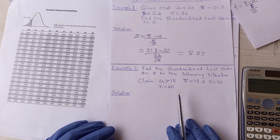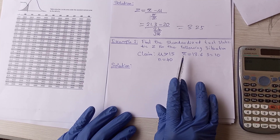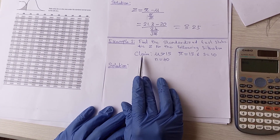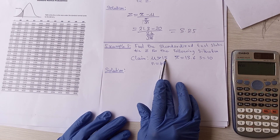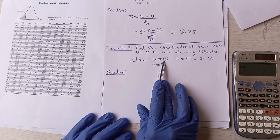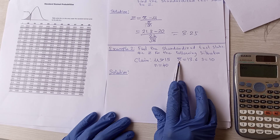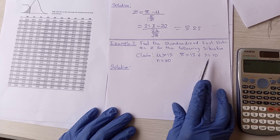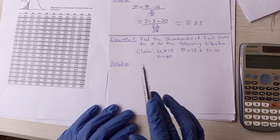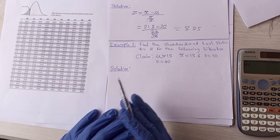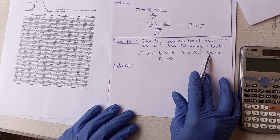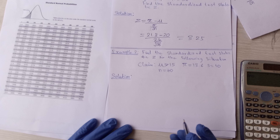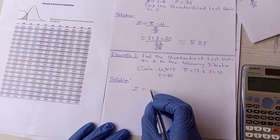Now for the second question: find the standardized test statistic z for the following situation. The claim is that mu is greater than 15. The sample mean is 13.6, the standard deviation is 10, and n — the sample size — is 40. Since n is greater than 30, we compute for z.